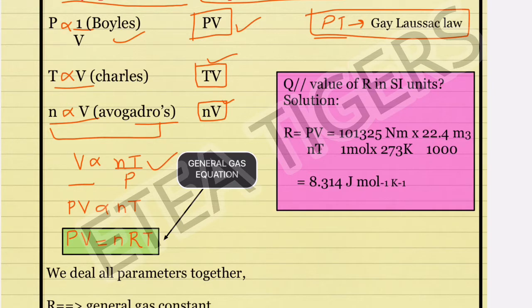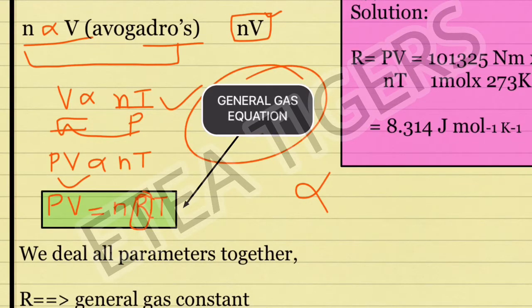PV directly proportional to nT. Then we have the general gas equation.